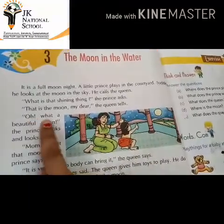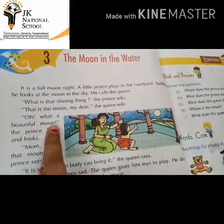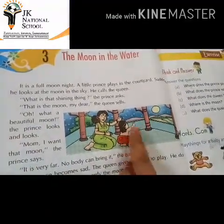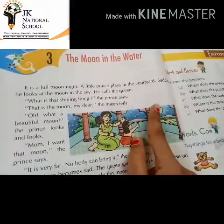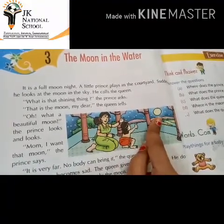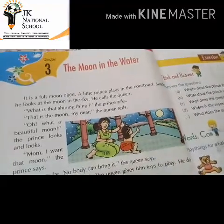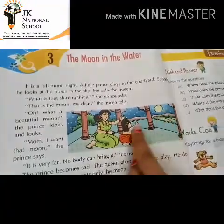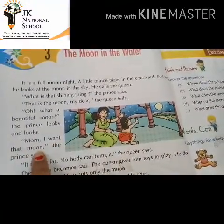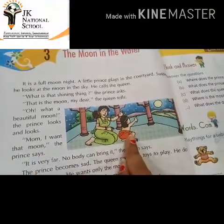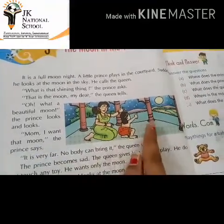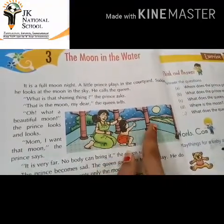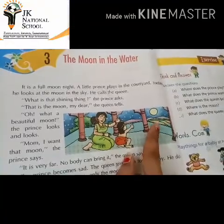The prince exclaims: 'Oh, what a beautiful moon!' He looks and looks at the moon. Then he says to his mother: 'Mom, I want that moon.' So the prince is admiring the moon and then tells the queen he wants it.